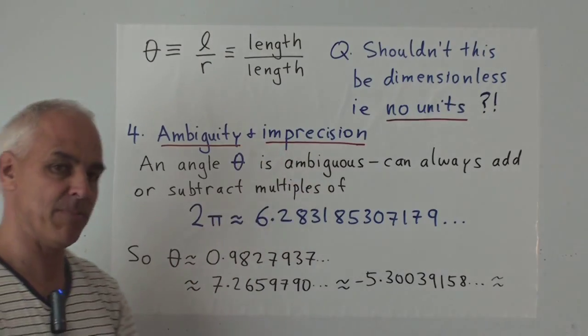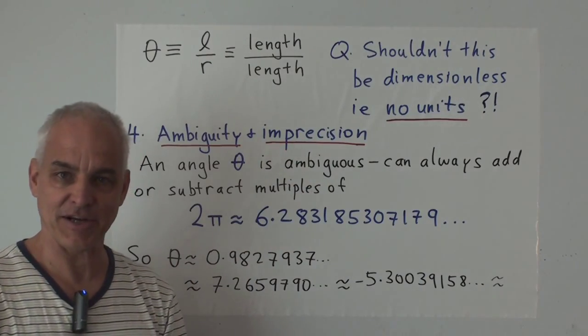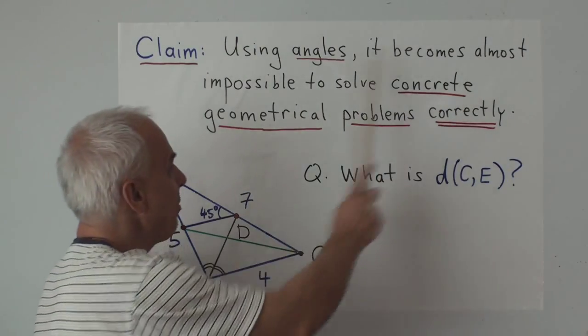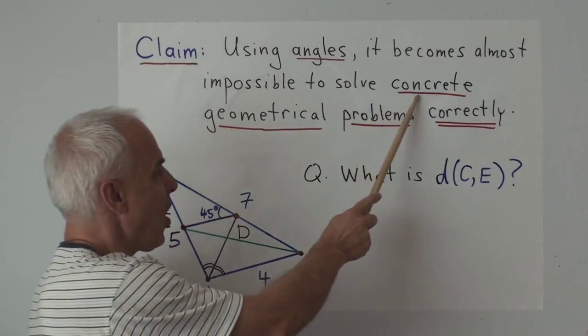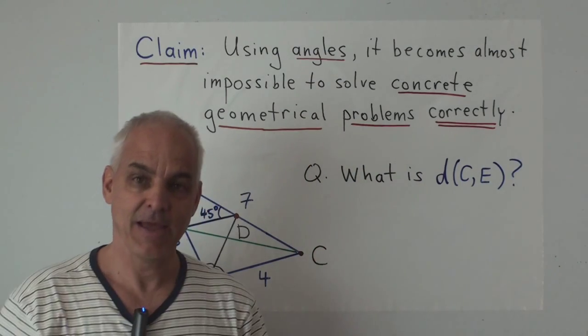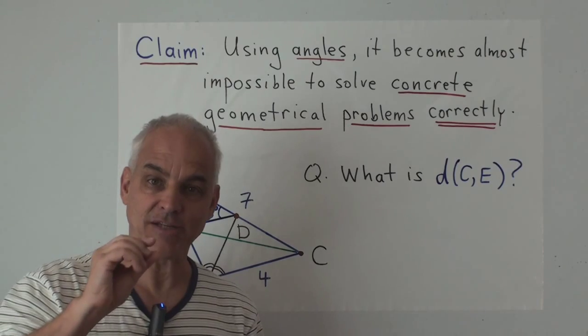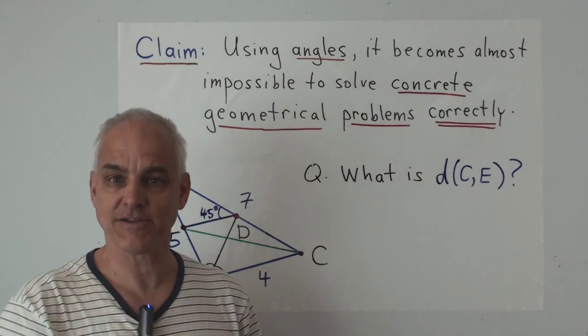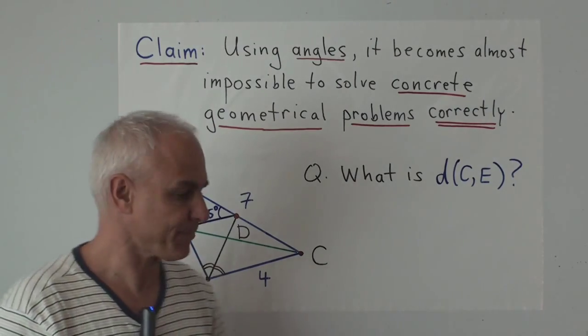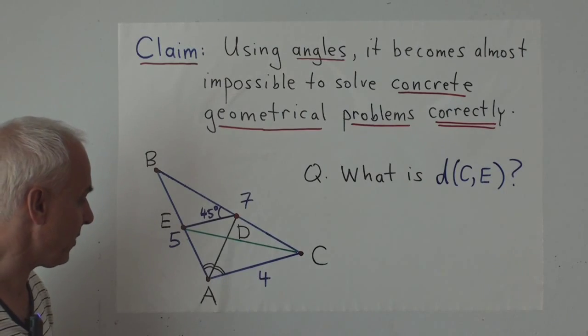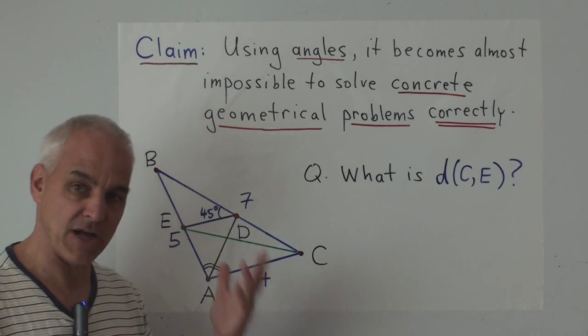Now let's talk about the imprecision that this necessarily leads to. All right, so I make the following claim, that using angles, it becomes almost impossible to solve concrete geometrical problems correctly. You lose contact with the actual correct solutions to the widest variety of geometrical problems.